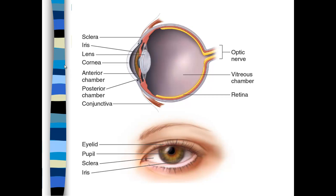Unfortunately, the older you get the more floaters you get. If you look carefully, you can probably see some floaters at any point in time, especially when looking under a microscope. The eyelid and pupil are also shown here. The pupil controls the amount of light entering, protecting the retina from too much light. The pupil will constrict and dilate. The white portion is the sclera and the colored portion is the iris.